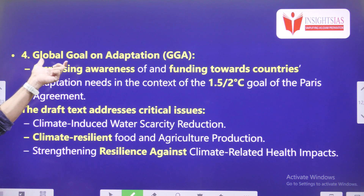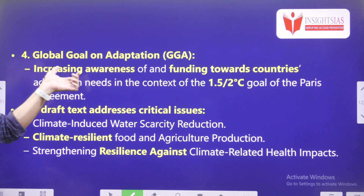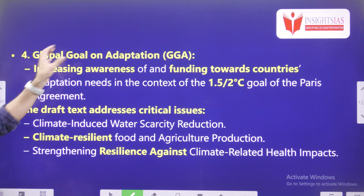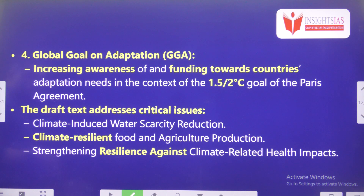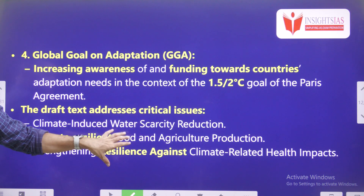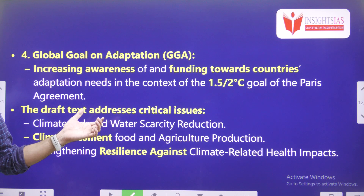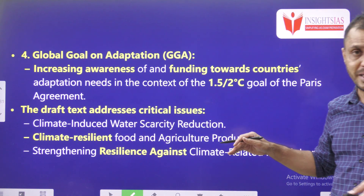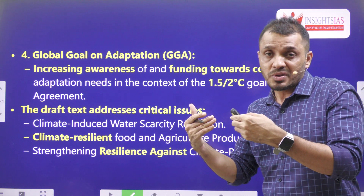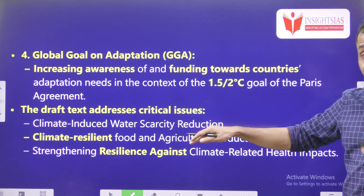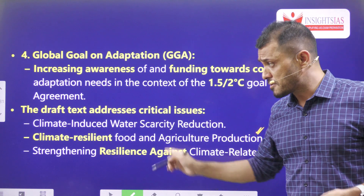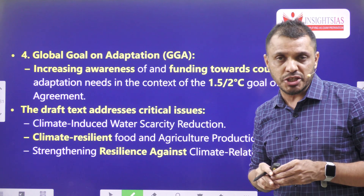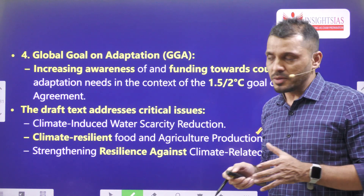Outcome number four is the Global Goal on Adaptation — funding towards countries which require adaptation to climate change so we can achieve the 1.5 or 2 degrees goal of the Paris Agreement. A draft text was released addressing critical issues: climate-induced water scarcity reduction, improving climate-resilient food and agriculture production, and strengthening resilience against climate-related health impacts.